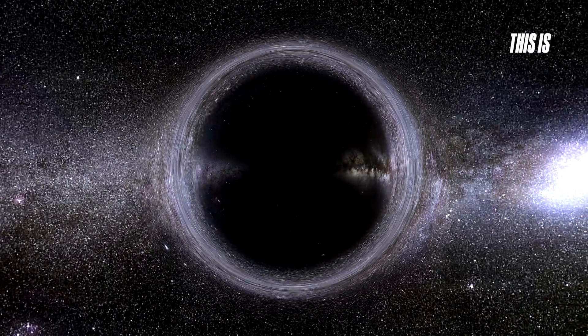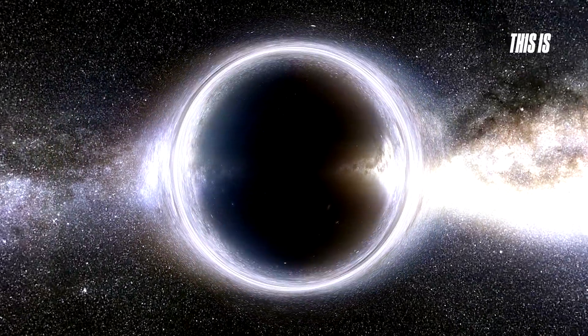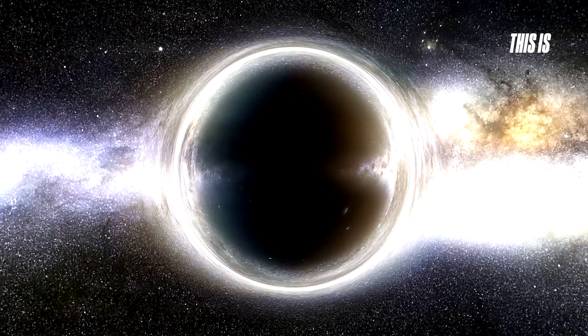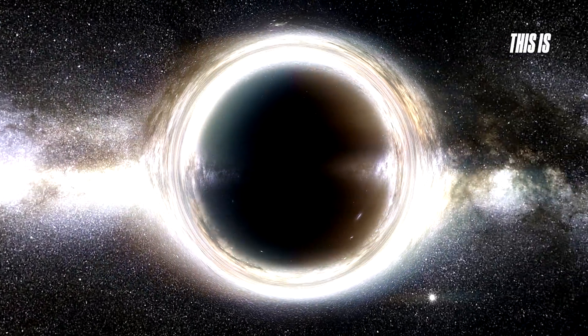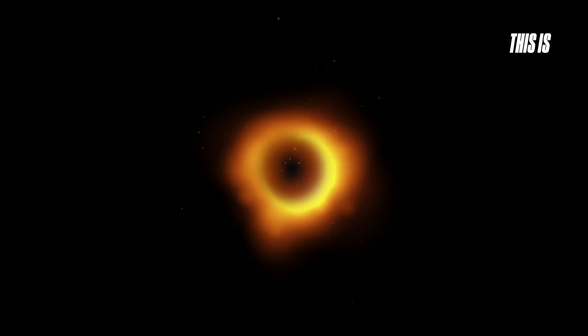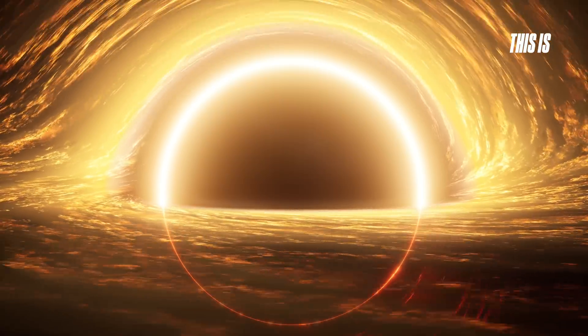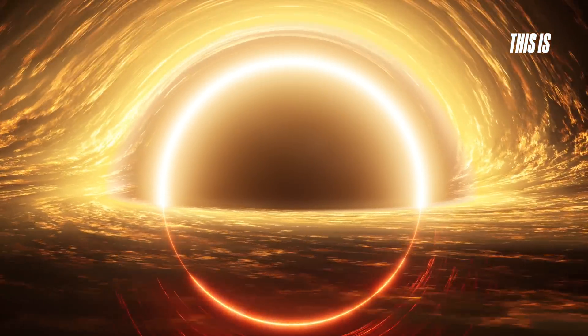At first glance, it might seem strange that we call it a hole, when in reality, a black hole looks more like a sphere. The term hole refers to the disappearance of any object that crosses into it, vanishing without a trace, as if falling into a bottomless pit. What we actually see from the outside is the event horizon. From a distance, this appears as a dark sphere or circle, often surrounded by a glowing ring of light, known as the accretion disk.